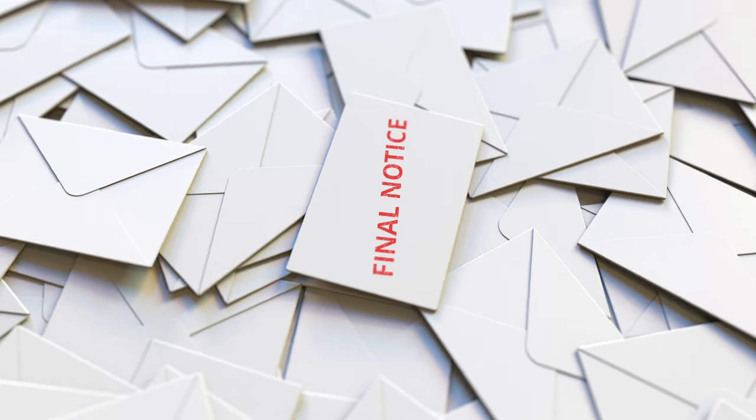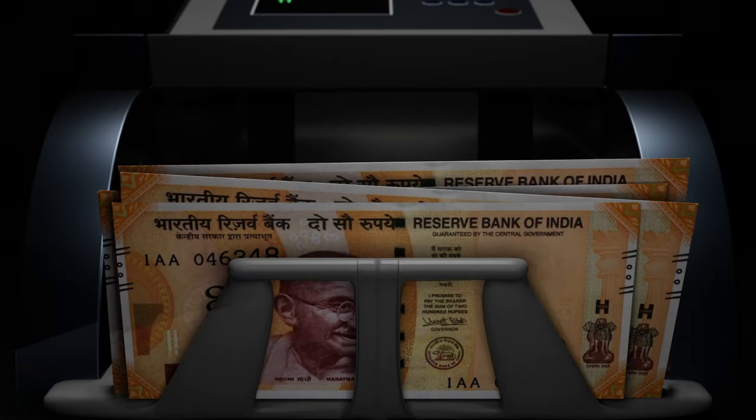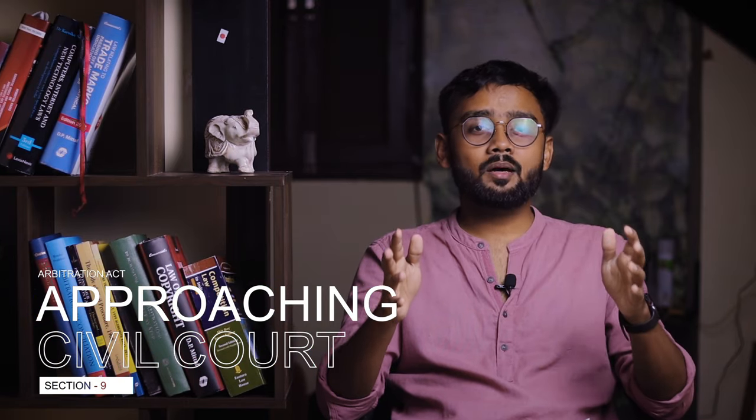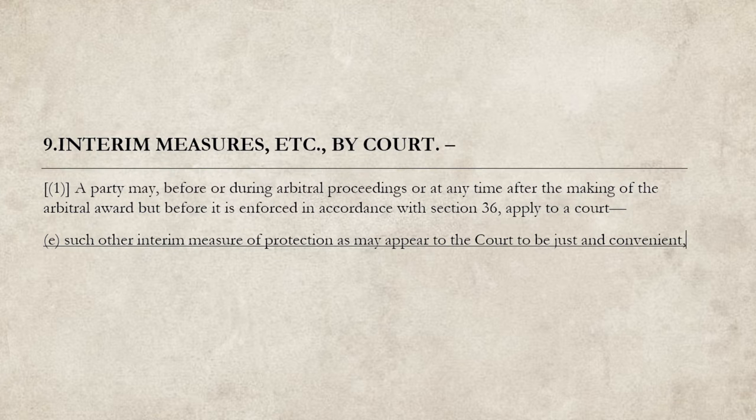The second step is not mandatory — it's optional and depends on the case. For example, if there is money involved in the dispute and I know that once I invoke arbitration the other party might run away with that money, what I'll do is approach the civil court under Section 9 of the Arbitration Act and seek a court direction to secure that money. Not only can you secure the money, but you can also protect goods, preserve property, go against the appointment of a receiver, and so forth. Now with a favorable order under Section 9, I'm assured my money is safe and I can focus on arbitration.